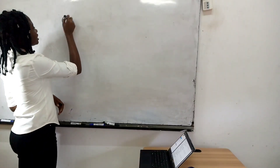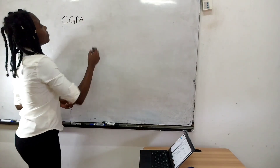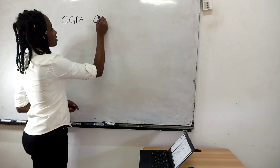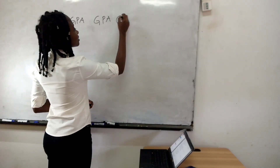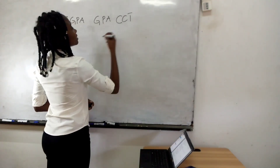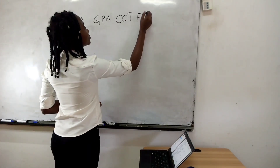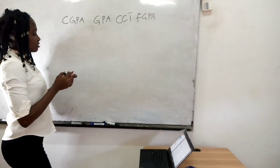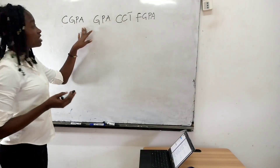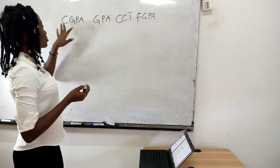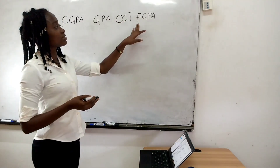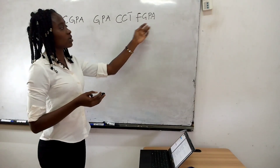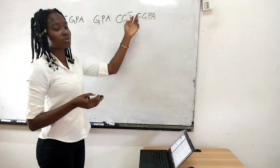So we need to see CGPA. We have the cumulative grade point average, the grade point average, the cumulative courses taken, and your final grade point average. This final GPA is what will determine your class — the class that you've graduated with after completing four years.